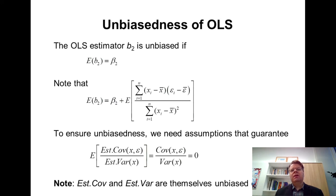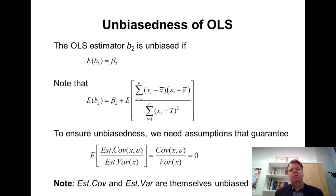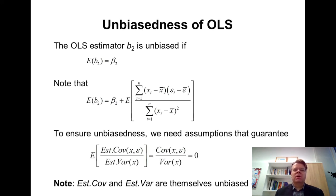Utilizing the fact that the sample covariance is an unbiased estimator of the population covariance, and similarly the sample variance is an unbiased estimator of the population variance, we can examine the population covariance between X and epsilon. Essentially, the OLS estimator is unbiased if the explanatory variable X is uncorrelated with the error term epsilon.